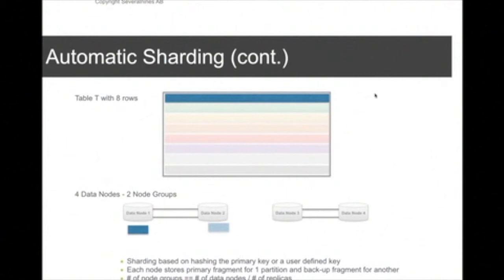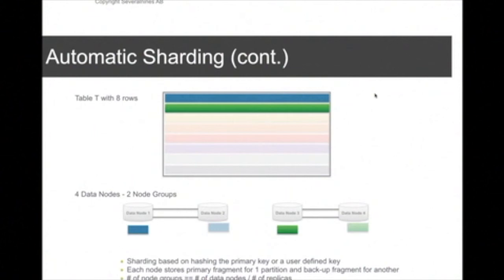You can also use a user-defined partition key to customize how data is distributed and minimize network calls. The green row is inserted onto data node three with a copy on data node four. The yellow row is inserted first into data node two with a copy on data node one. Replication between data nodes is done synchronously using a two-phase commit protocol. After the commit completes, you are assured that the row has been stored on two different data nodes.